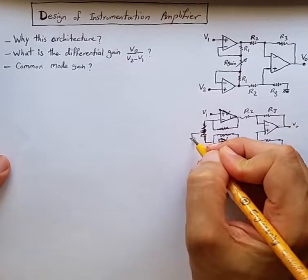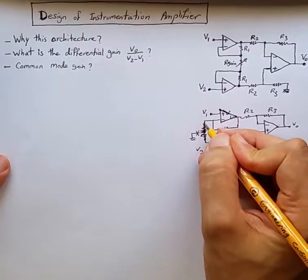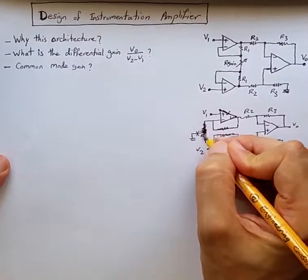So rather than having two resistors here we can disconnect it from the ground and we can just insert one resistor.